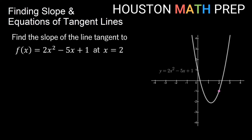So let's say we wanted to find the slope of the line that is tangent to f(x) = 2x² - 5x + 1. We want to know the slope of the tangent line at x = 2. To find the derivative, that's going to be easy — we'll use power rules for each of these terms.